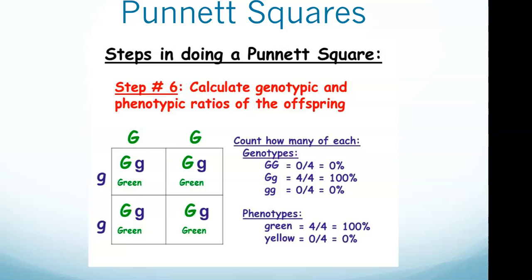To make a Punnett square, start by drawing a box that's divided into four equal squares, and you can see this on the screen. We have four equal squares. What we do next is label the rows with one parent's genotype and the columns with the other parent's genotype.